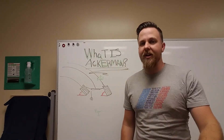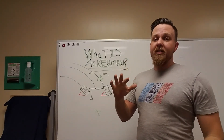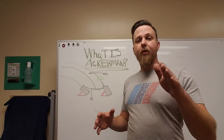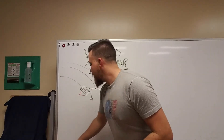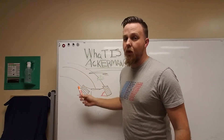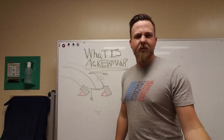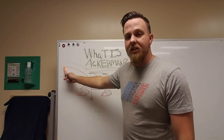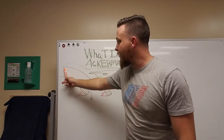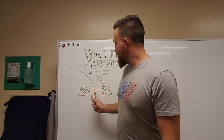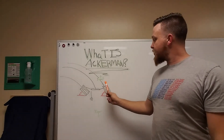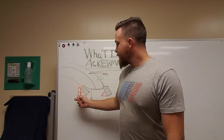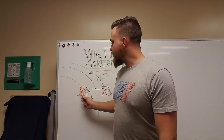Ackerman is the measurement of the difference in angle from your leading wheel and your trailing wheel. The reason why Ackerman exists is because when your car is driving at a particular radius, your trailing wheel — since it's further towards the outside — is tracing a much wider line around a turn than the leading wheel. The leading wheel, being so much further inboard, has to trace a smaller circle.